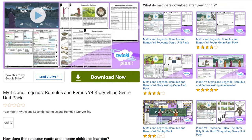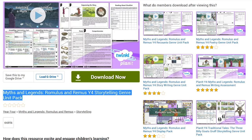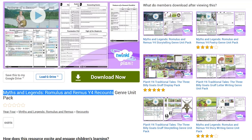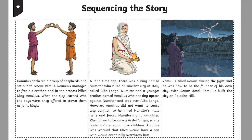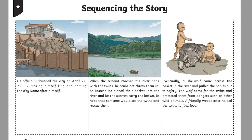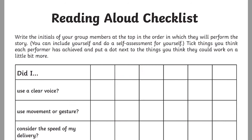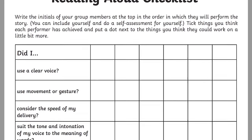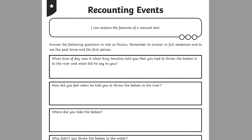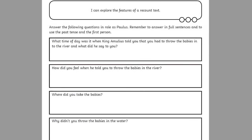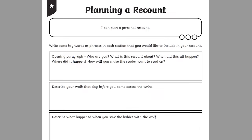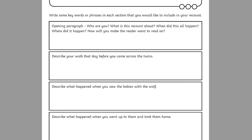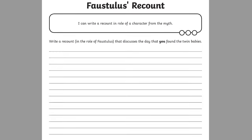Or look at different types of fiction writing through the context of Romulus and Remus. Start with this storytelling unit or recount unit packs, perfect for following up story card or sequencing activities. These units focus on retelling the myth by way of drama to explore the characters, or by writing simple recounts — allowing your child to plan and write personal accounts from within the world of this myth.